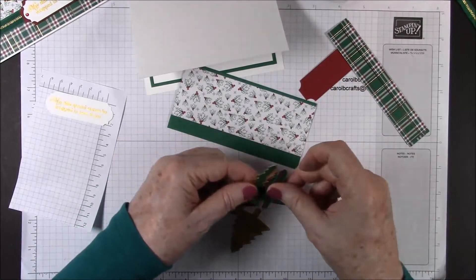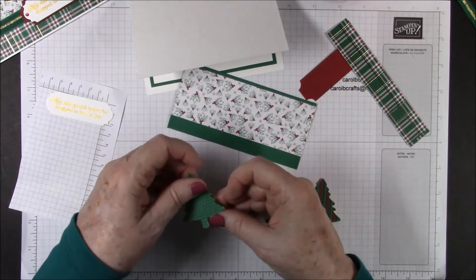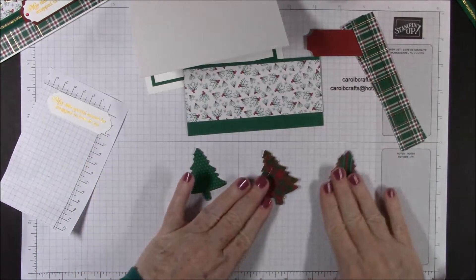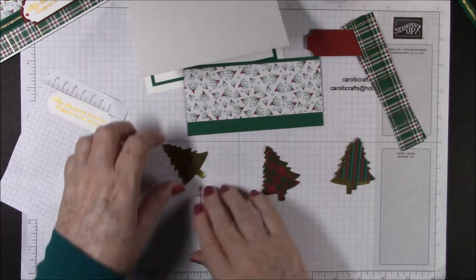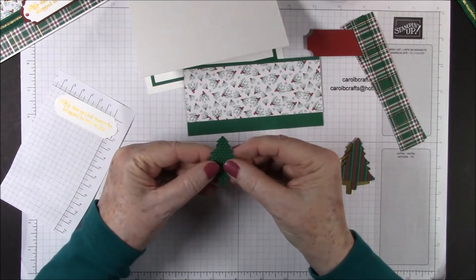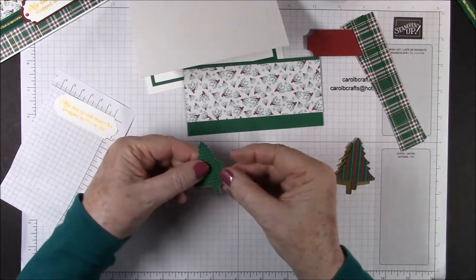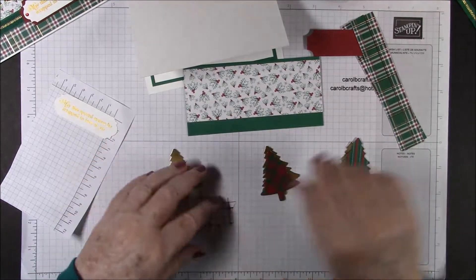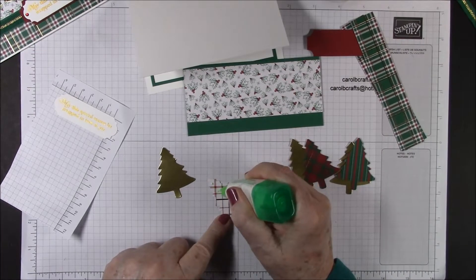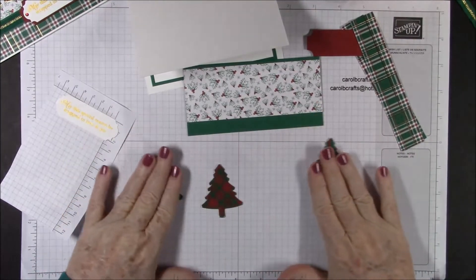These are going to go behind our DSP trees. We're going to put these on with glue. Be sure not to get glue on your gold foil. We're going to offset these so that there's just a tiny bit of gold shadow underneath the tree, just like that. So that's what we're going for, so we'll go ahead and glue these on.